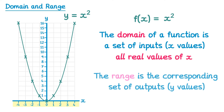The range is the corresponding set of outputs for the inputs that you've selected — you could think of this as the y values. Notice how it's not possible to get a negative number for this function, so negative numbers won't feature in the range. If we continue to plot more points, you'll actually be able to get any positive number as an output. Of course 0 is also in the range, so we'd say the range is f of x is greater than or equal to 0.